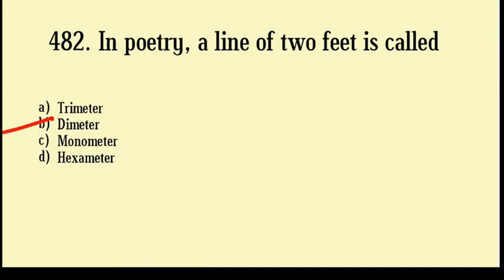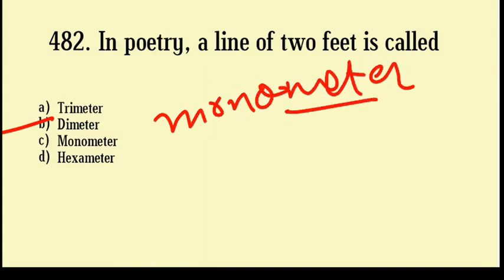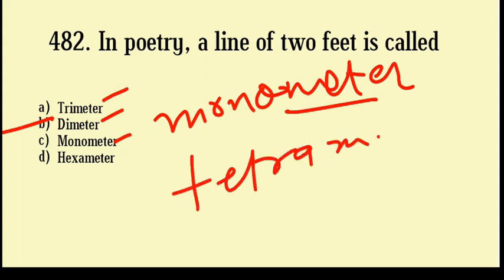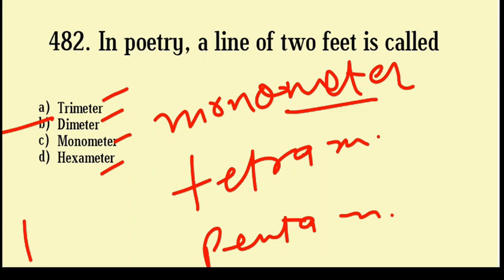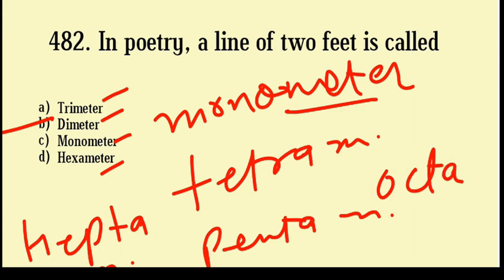If the line has only one foot, it is called a Monometer. Two feet is Diameter, three feet is Triameter, four feet is Tetrameter, five feet is Pentameter, six is Hexameter, seven is Heptameter, eight is Octameter.